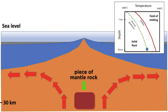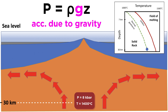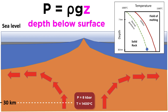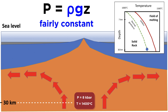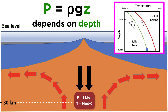Let's follow an ascending piece of mantle rock as it rises beneath a mid-ocean ridge. At a depth of about 30 kilometers, our piece of mantle has a temperature of 1400 degrees Celsius. Its pressure can be calculated using the equation p equals rho g z, where rho is its density, g is acceleration due to gravity, and z is the depth below Earth's surface. Since rho and g are more or less constant for this example, the main variable affecting the pressure is the depth. The more mass above a given area, the higher the pressure will be. The two black arrows are representative of the downward pressure. The upper right section shows a phase diagram corresponding to the state of our piece of mantle in pressure-depth space.